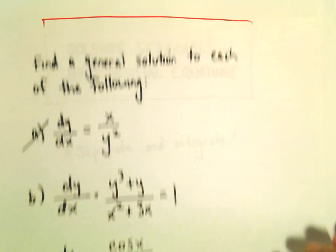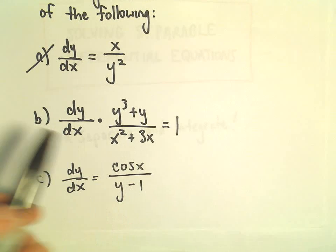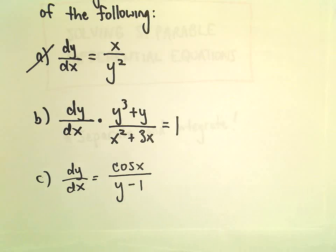All right, so just another example here of finding a solution to a separable differential equation. So in part B, we have dy over dx times y cubed plus y over x squared plus 3x equals 1.